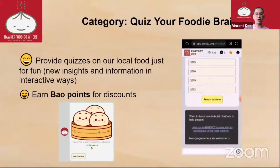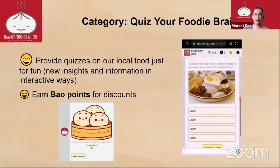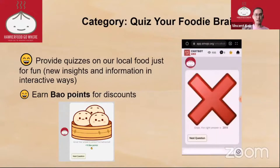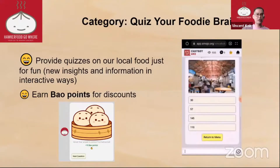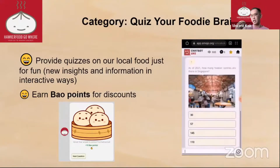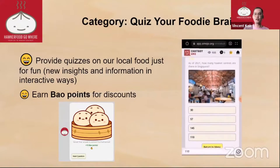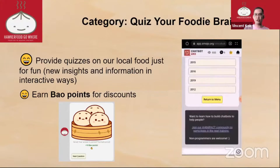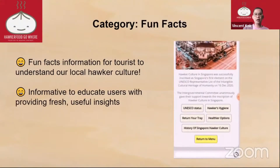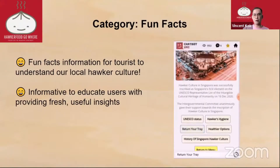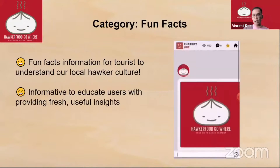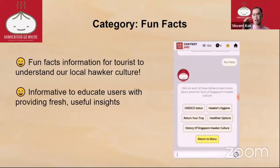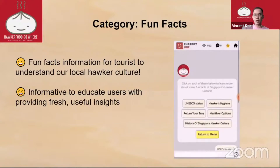This is the quiz — a lot of my friends and family like it because there's a Pao point system that can be used for discounts. It's not just answering questions; they can gain loyalty points. The questions can be updated regularly for different challenges. For fun facts, it covers different topics about Singapore hawker culture, and that can be updated as well.